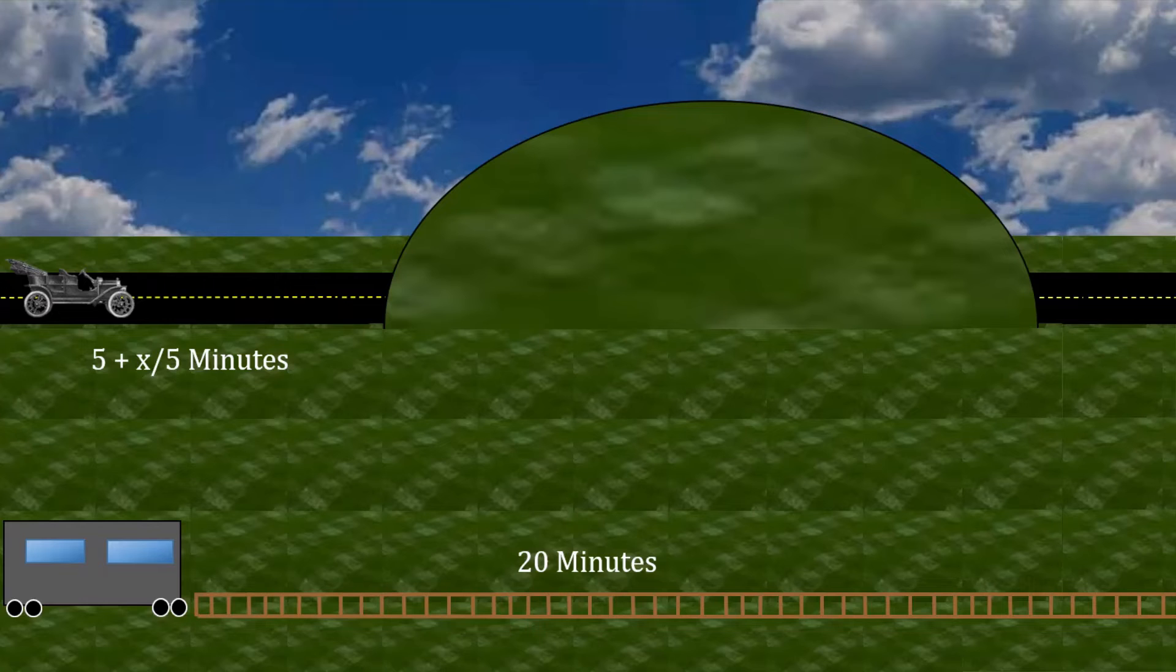Let's compare that to what would happen if we rerouted the freeway to go through the mountain. Like before, the commuters need to divide themselves between driving and taking the trolley. And for everyone to be taking an optimal action, we're going to need the travel times to be equal to one another. In other words, 20 needs to be equal to 5 + x/5. And if we solve for x, we get x equal to 75.